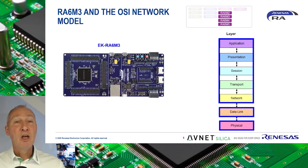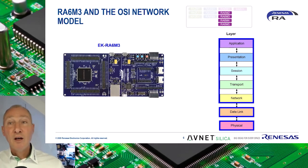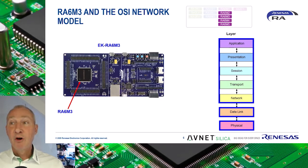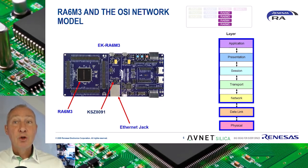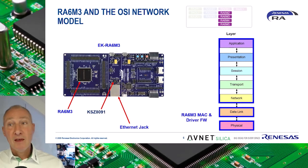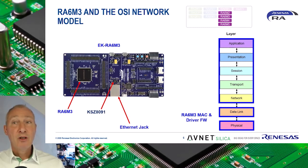So how is Ethernet implemented in the RA6M3? The RA6M3 does not have an integrated physical interface. The interface between the RA6M3 and the PHY chip is the media-independent interface, MII. The RA6M3 also supports the reduced media-independent interface, RMII, that reduces the number of pins required to connect a MAC layer device to a PHY layer device. At the data link layer, the Ethernet peripheral — which consists of the Ethernet controller and Ethernet direct memory access controller — provides Ethernet frame processing in accordance with the IEEE 802.3 specification.